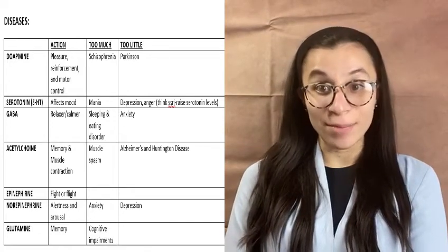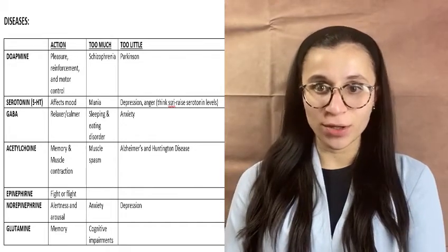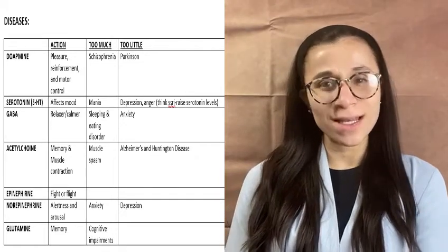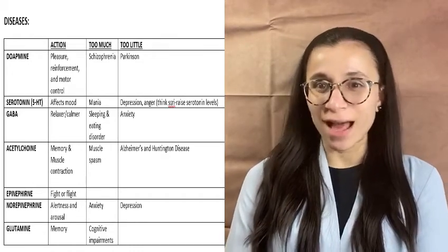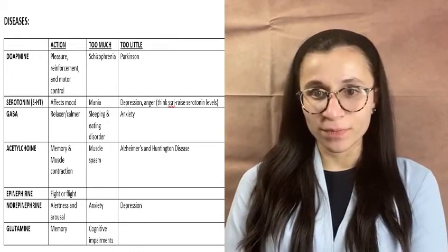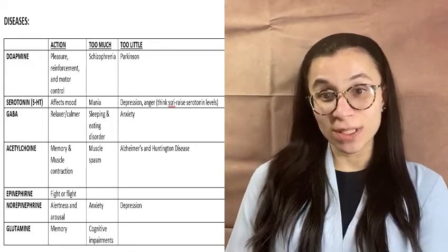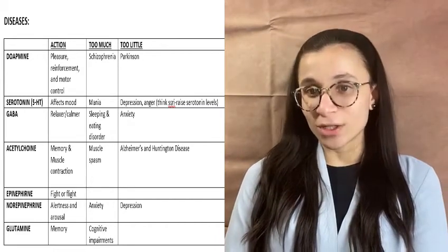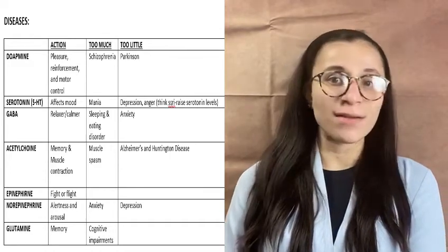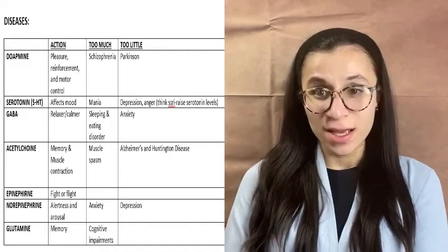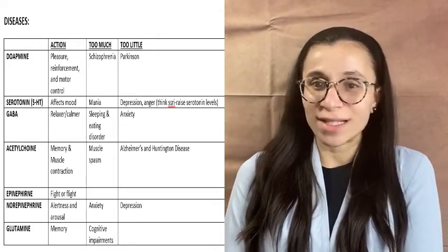The next one is GABA. GABA is the major inhibitory neurotransmitter — it relaxes and calms you. How I like to remember it is GABA as in Gabby, who is always calm. If you have too much of it, you're going to have sleeping and eating disorders. If you have too little — think about someone who is never relaxed — they're going to be anxious and have anxiety.